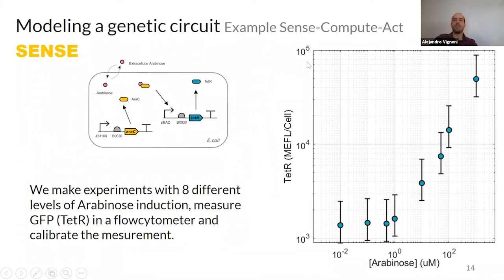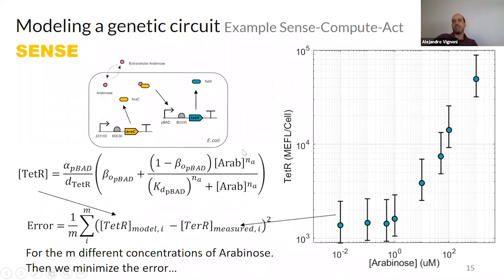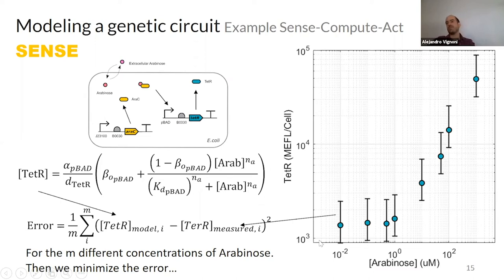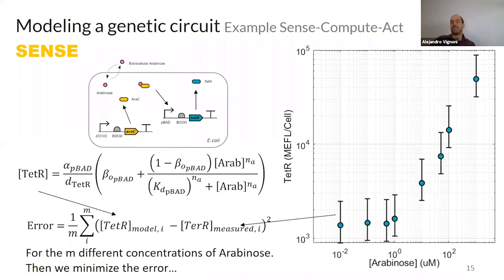Doing that, we get a plot with arabinose on the x-axis and theta — derived from the GFP reading but in the same units — on the y-axis. For different induction levels of arabinose, we get different expression levels of the protein. We want to compare the model output for the same arabinose values with the measured data, using mean squared error as the objective: the squared differences between model predictions and measurements, averaged over all samples.